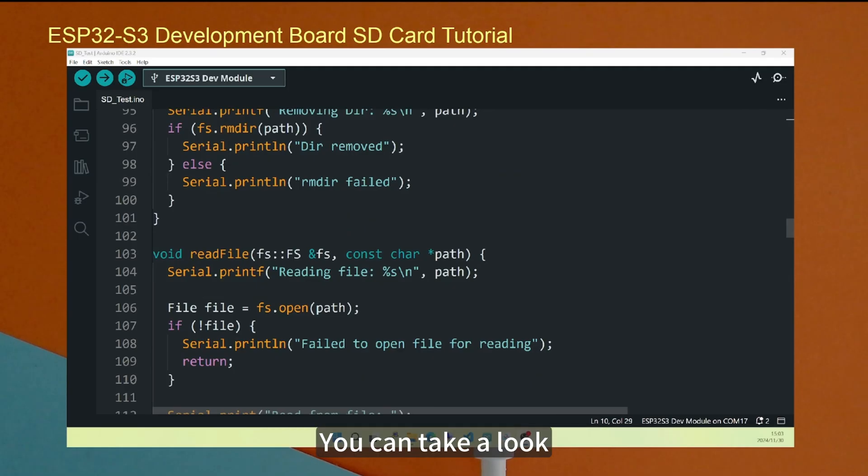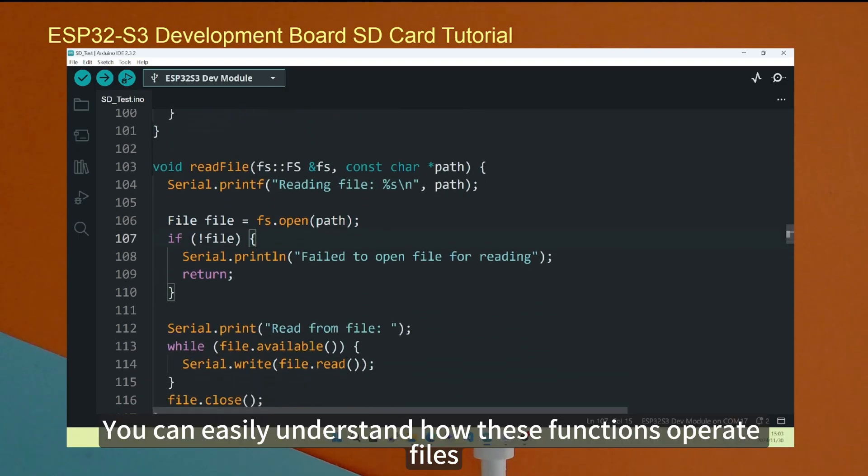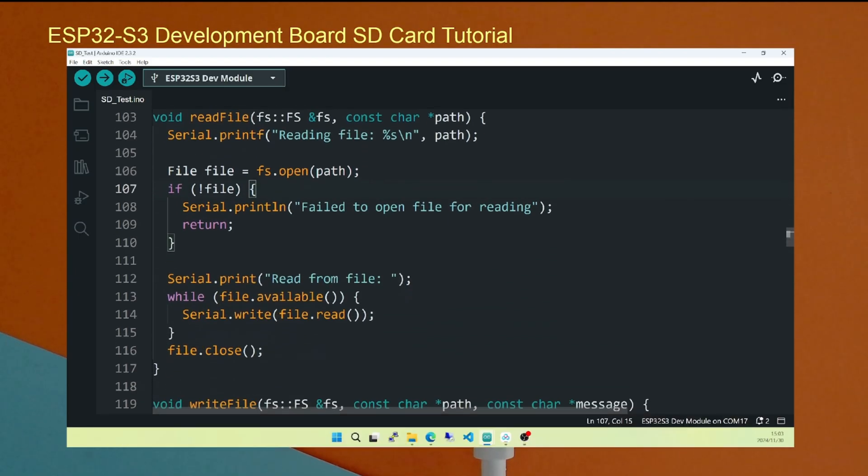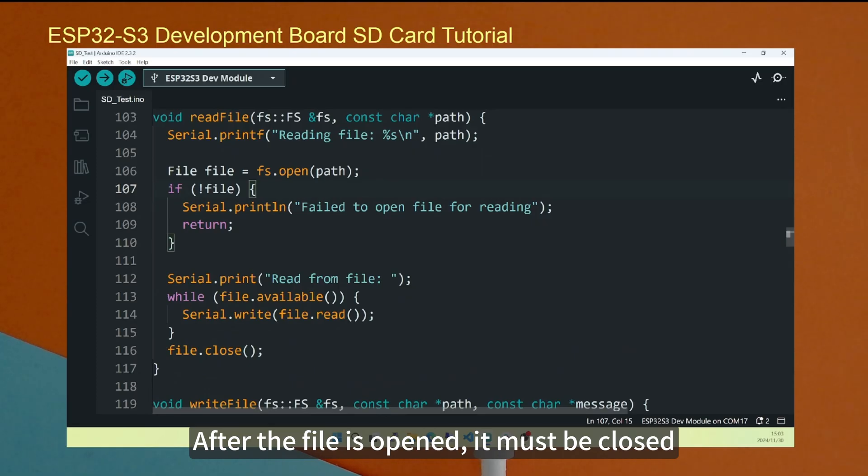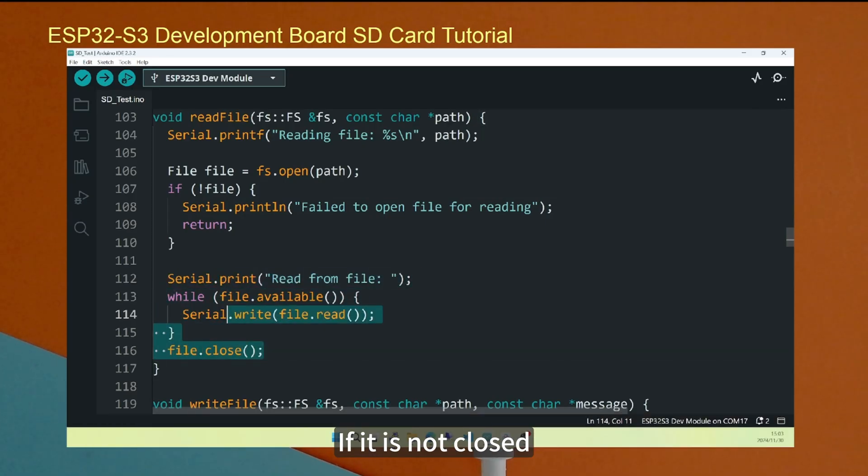You can take a look. This is a function that creates a file. Then open the file. This is a function that opens a file. This is called opening. If you are familiar with C or C++, you can easily understand how these functions operate files. After the file is opened, it must be closed. This is something you must pay attention to when writing programs. If it is not closed, it may have a memory overflow.